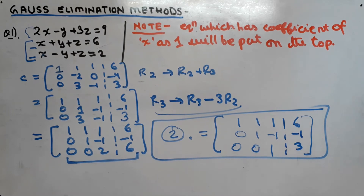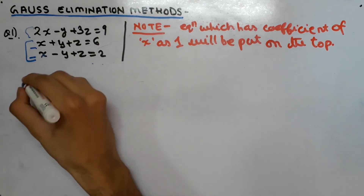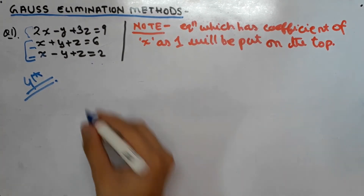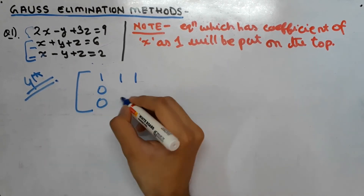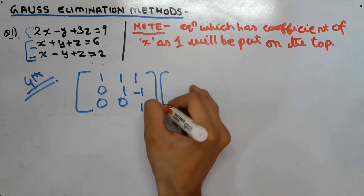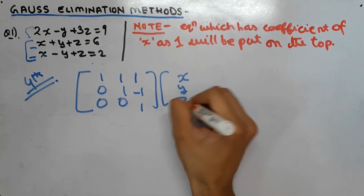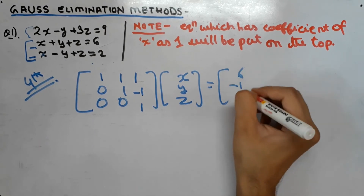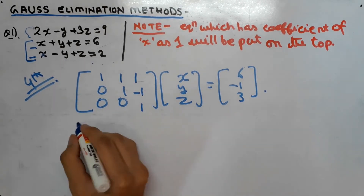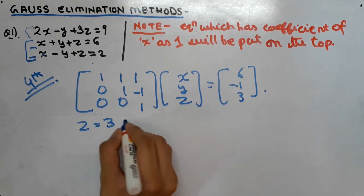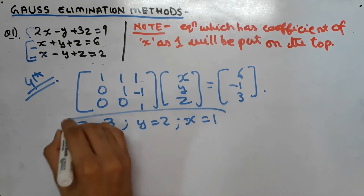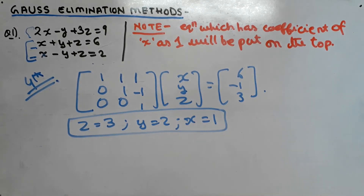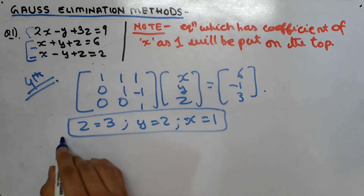We use this echelon form to find the values of x, y, and z in our fourth step. Writing the matrix as equations and solving back-substitution, we obtain z = 3, y = 2, and x = 1. These values are found by converting the matrix back into simple linear equations as explained in the working steps. This is our final answer for question 1.